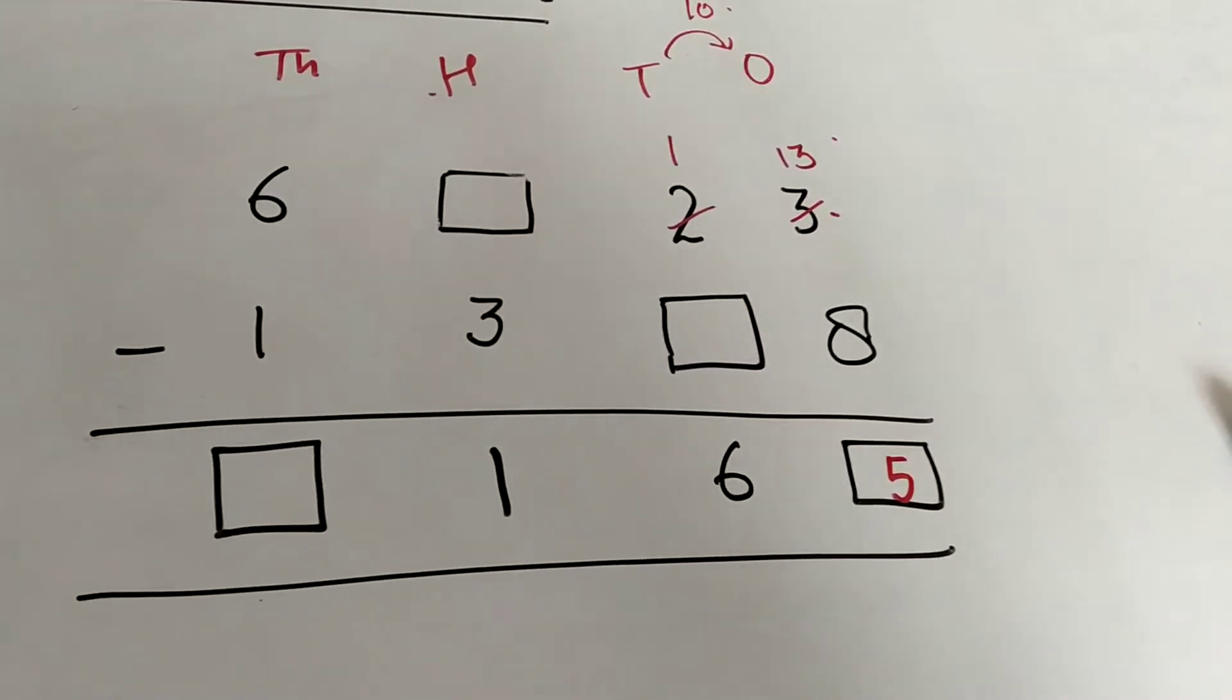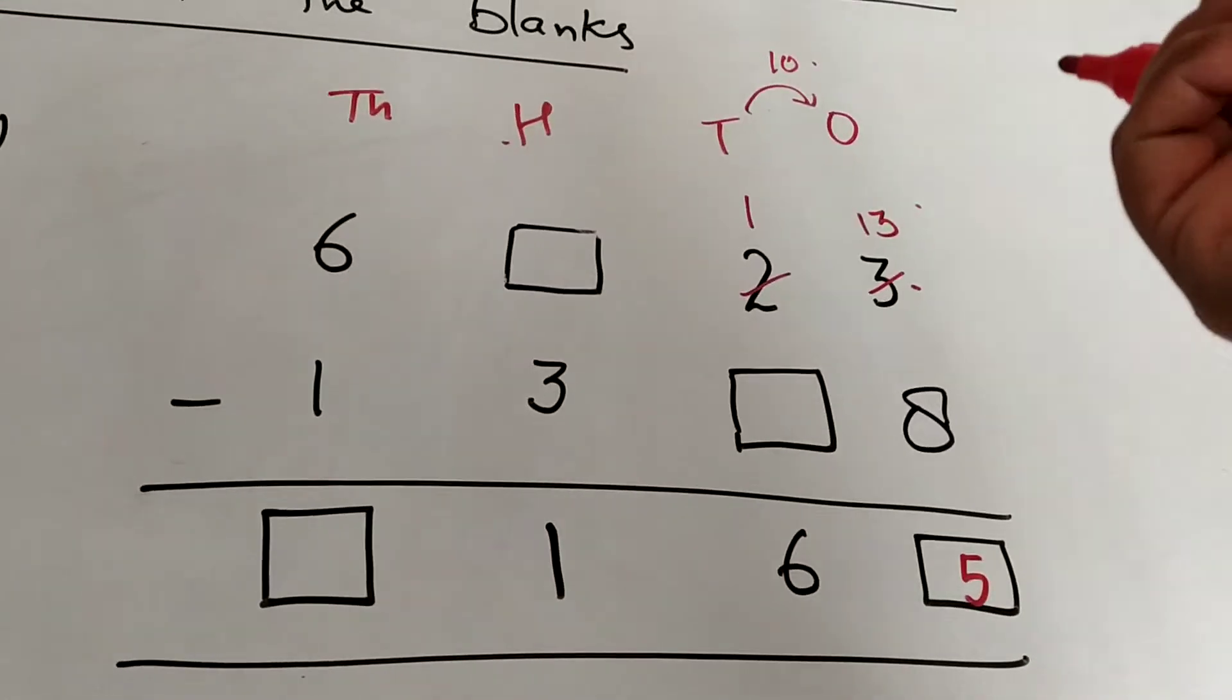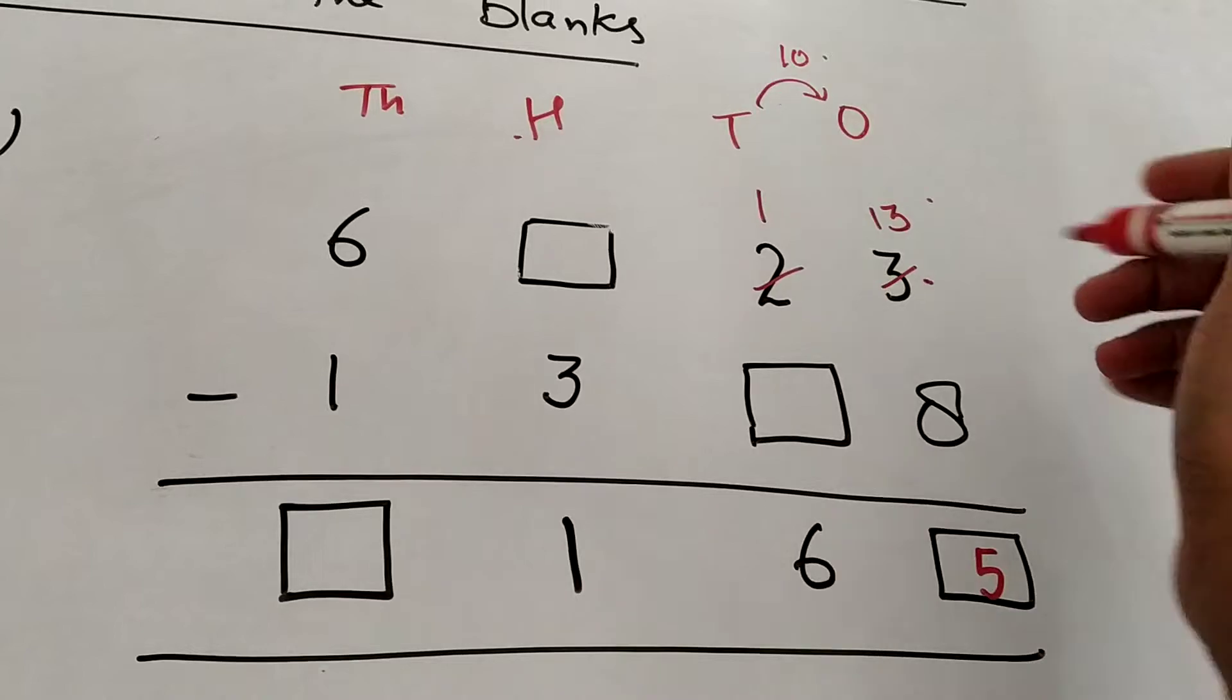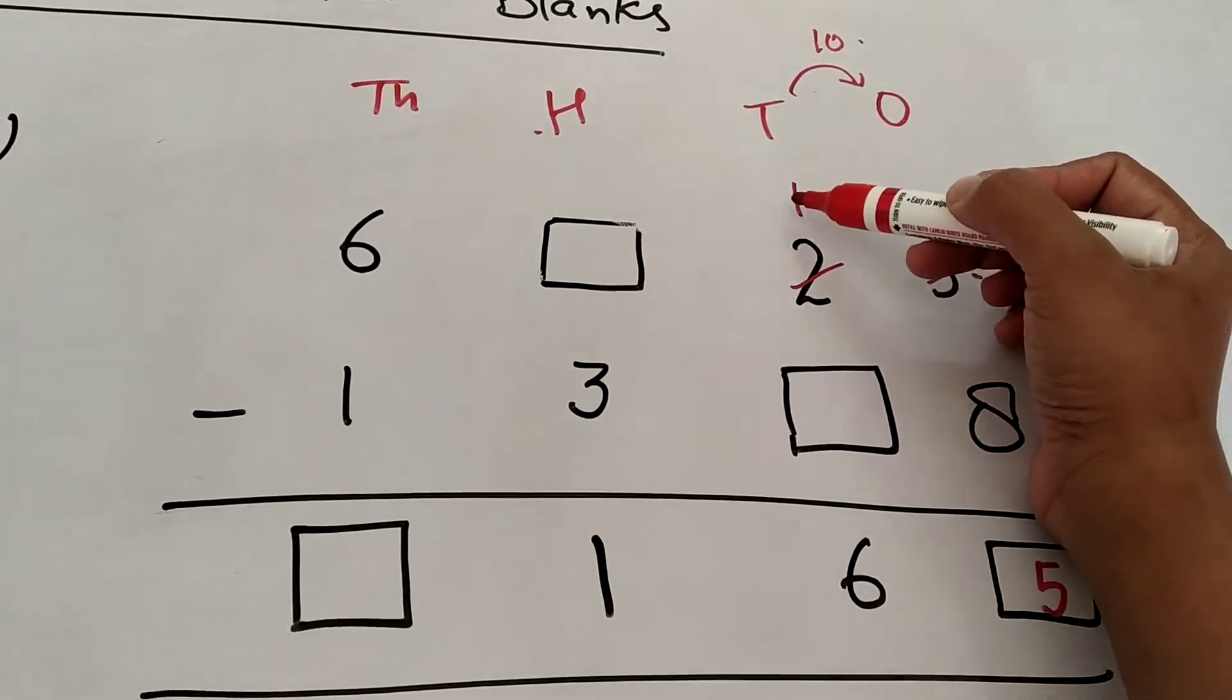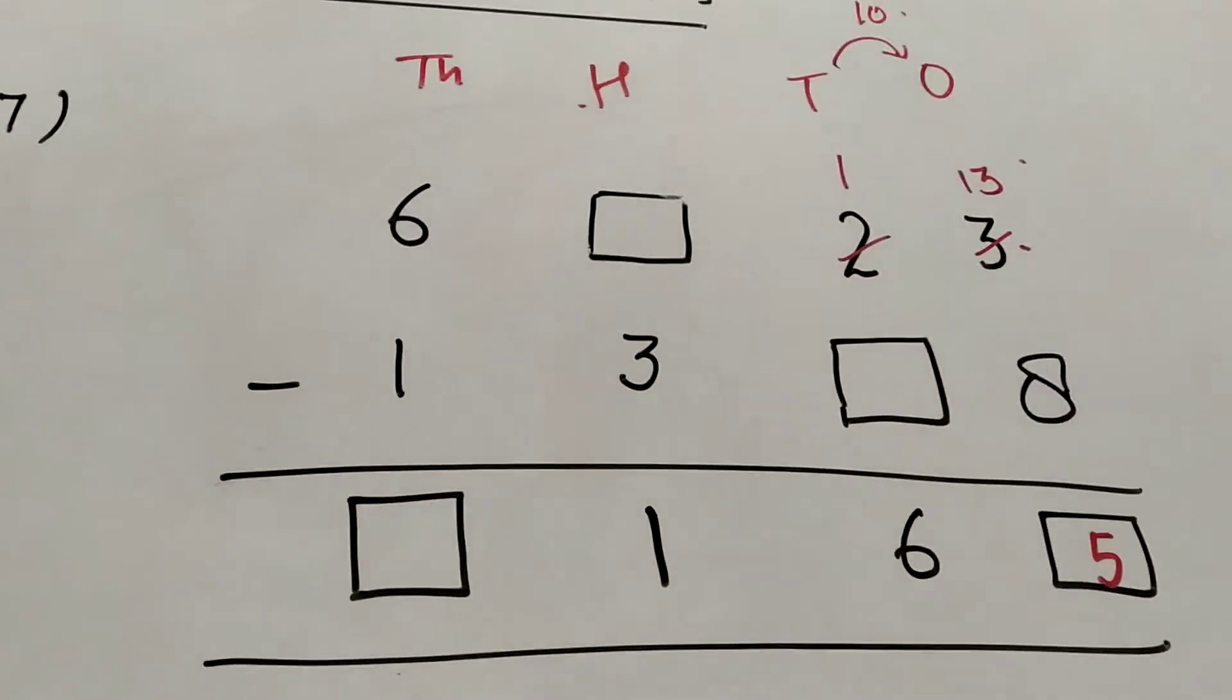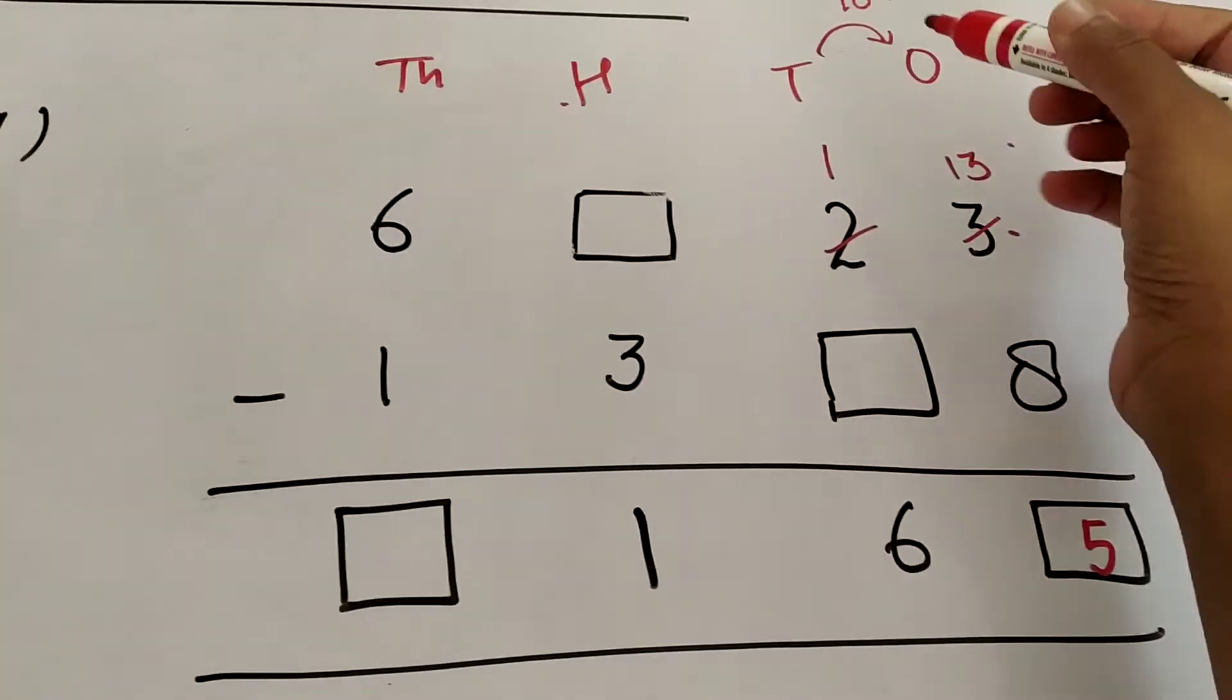Because 1 itself is a very low number. From 1 we cannot subtract any number to find 6, so obviously there has been a borrow here from this number. We have to think reverse to get the numbers.